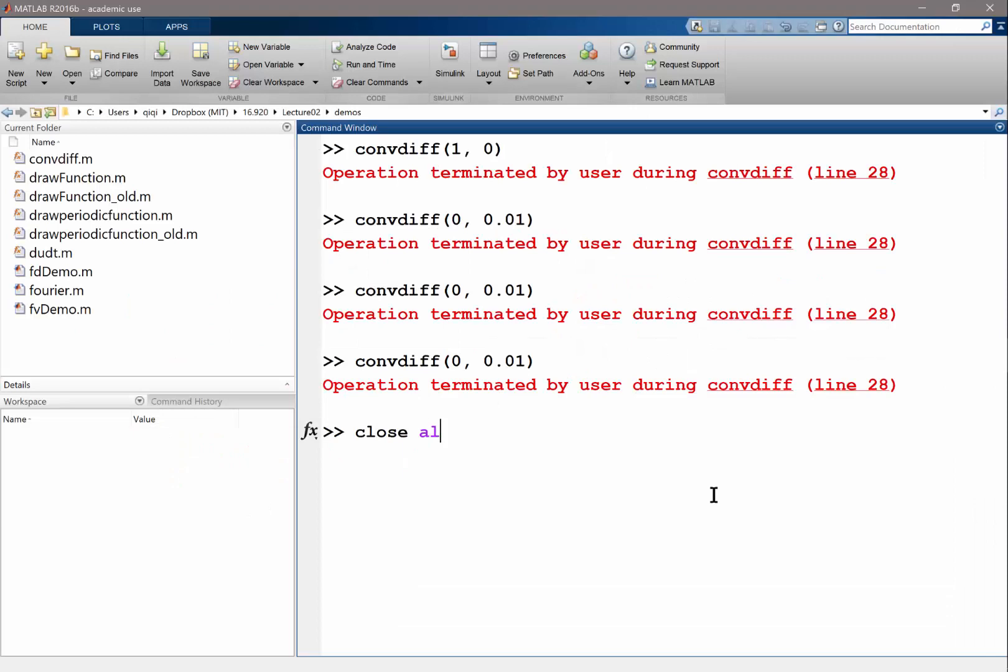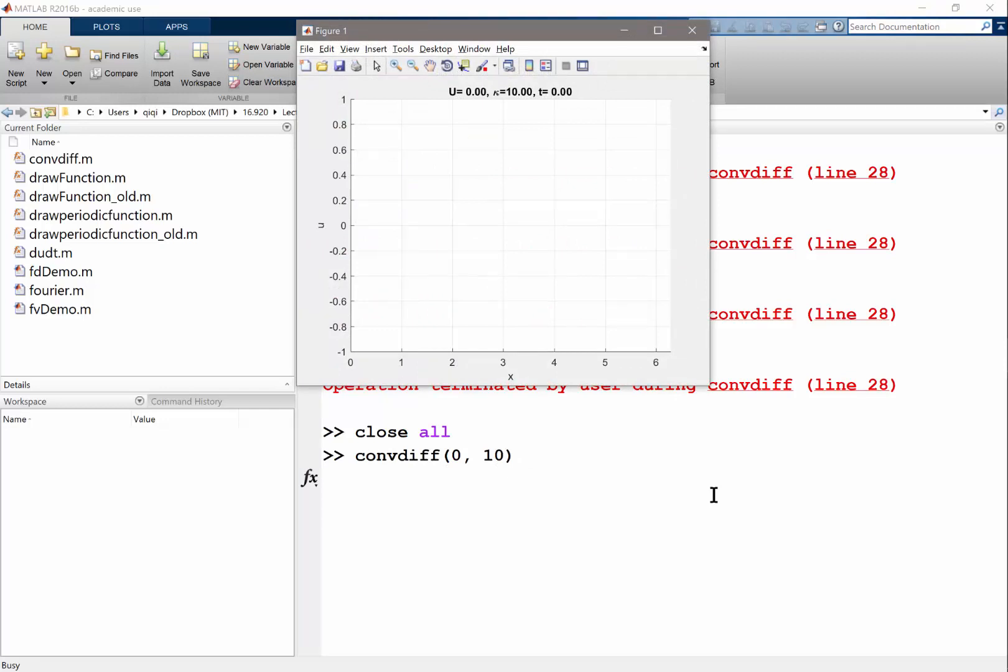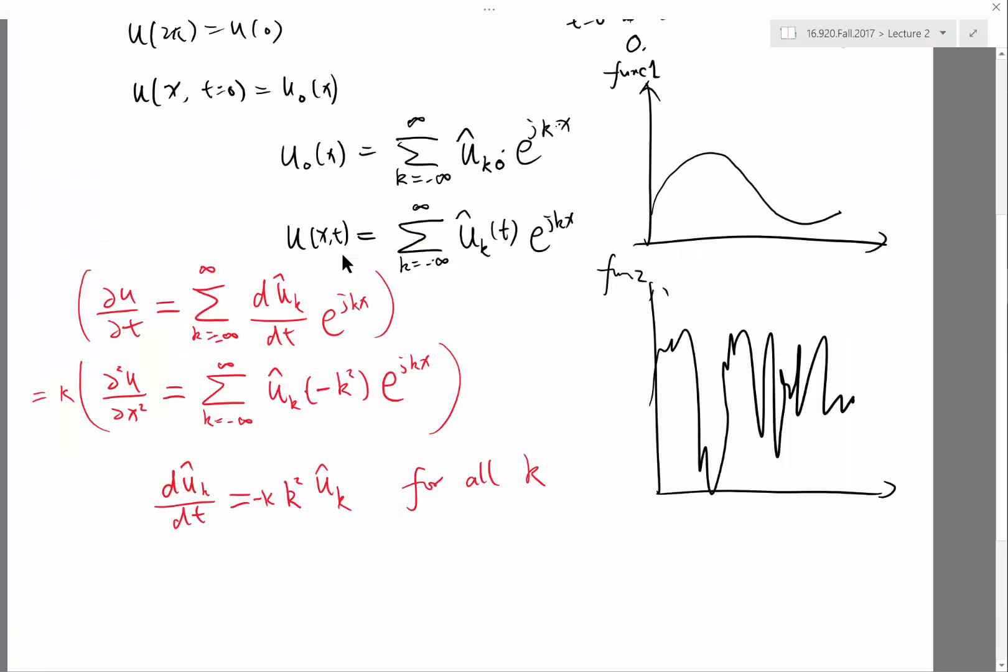And another thing is, so let's try a much bigger coefficient. Let's do 10. Another thing is, whatever initial condition you draw, this time it decays very quickly. But then you get a constant. Why is a constant not moving? Can somebody explain the fact from this equation? The constant term, the k equals 0 term? k equal to 0 term, exactly. When k is equal to 0, the 0 term e to the j kx is a constant. So the constant term never decays because k squared is equal to 0.